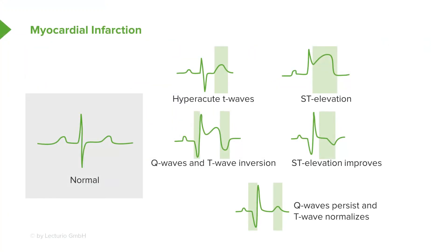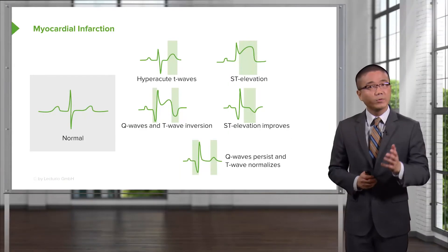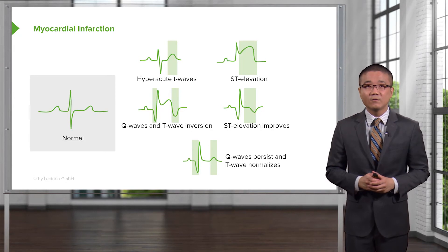Let's move on to a discussion of myocardial infarction in the post-operative period. On the far left side of the screen, you see a normal EKG. As highlighted by the green bars, you see various changes when a patient may have a myocardial infarction. We can see hyperacute T waves, ST elevation, Q waves, and T wave inversions. In the fourth quadrant, you see when the ST elevation has improved depending on when you capture the EKG. In patients who have had a myocardial infarction, there may actually be Q waves that persist even though the T waves have normalized. Coupled with the troponin, this may be highly sensitive for a myocardial infarction.